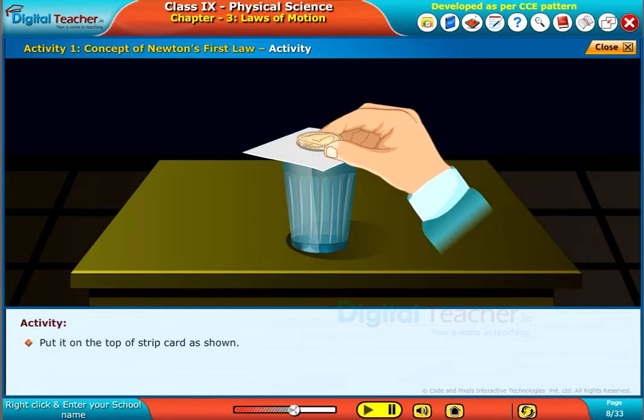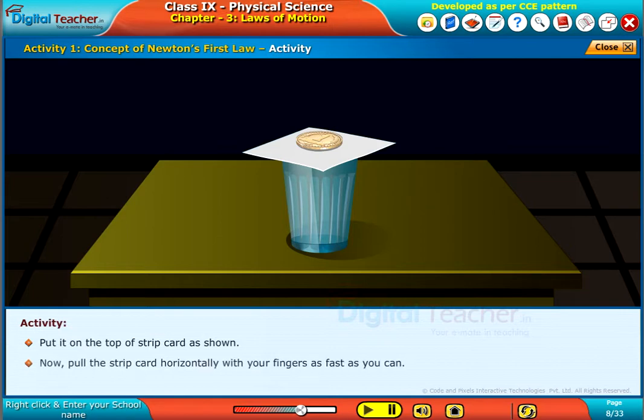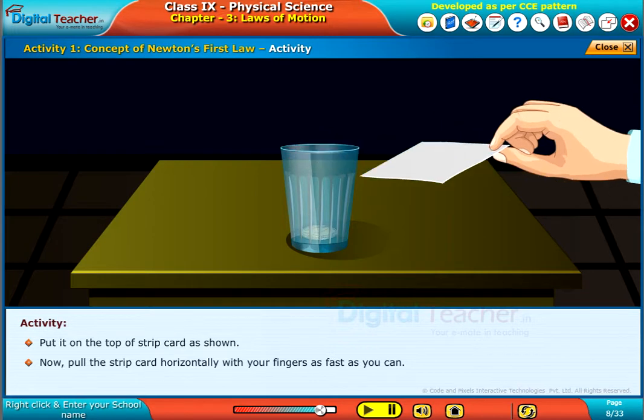Put it on the top of the strip card as shown. Now pull the strip card horizontally with your fingers as fast as you can.